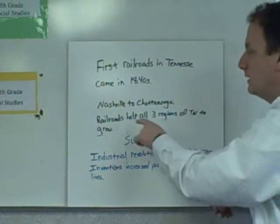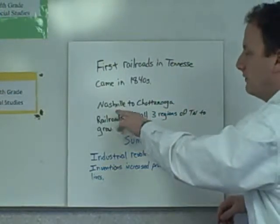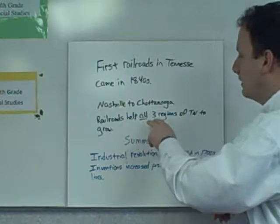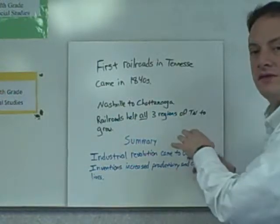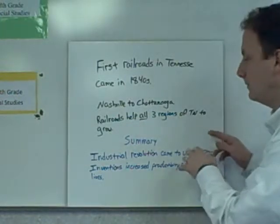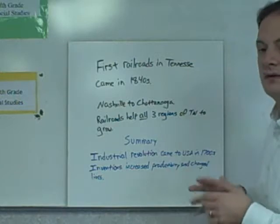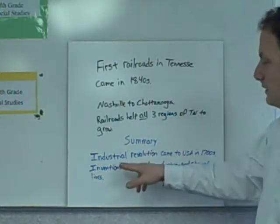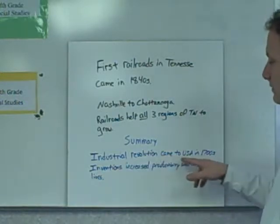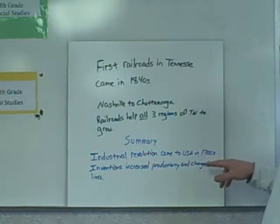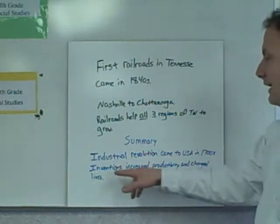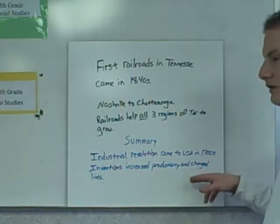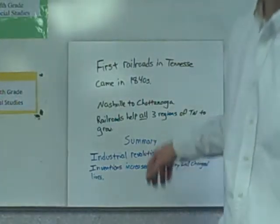The first railroads in Tennessee came in 1840 and ran from Nashville to Chattanooga. The railroads helped all three regions of Tennessee to grow. In summary, the Industrial Revolution came to the U.S. in the 1700s, and new inventions increased productivity and changed lives.